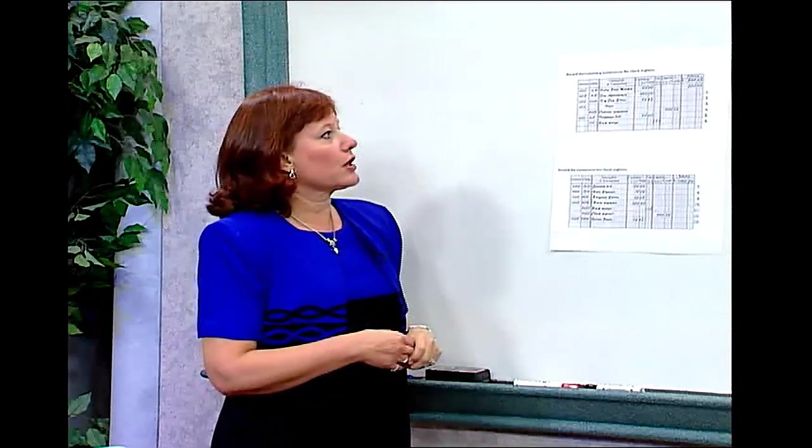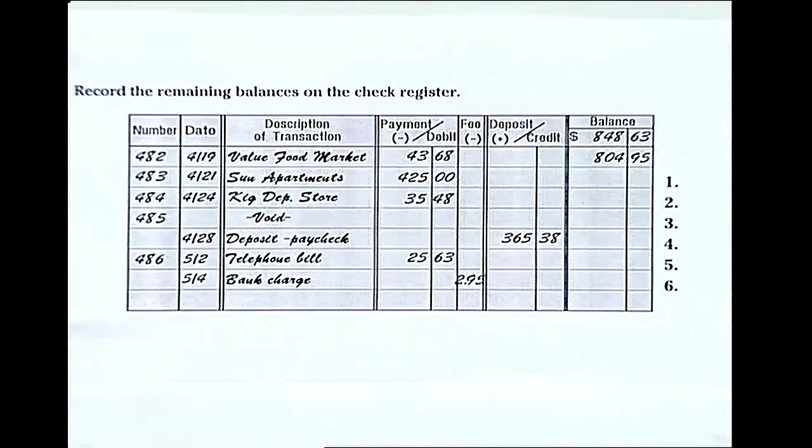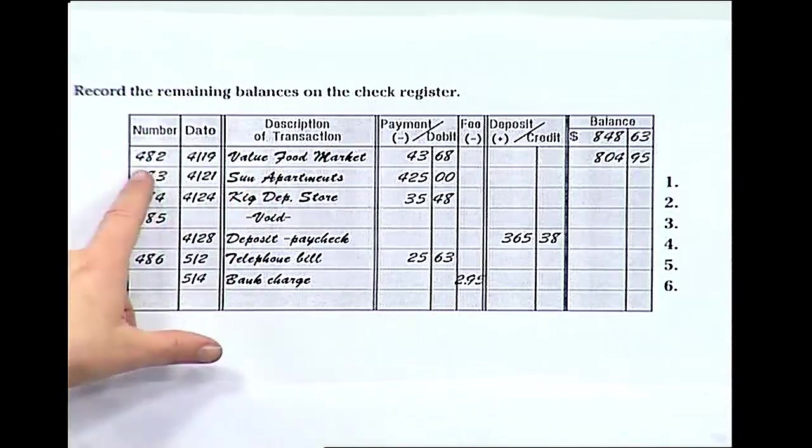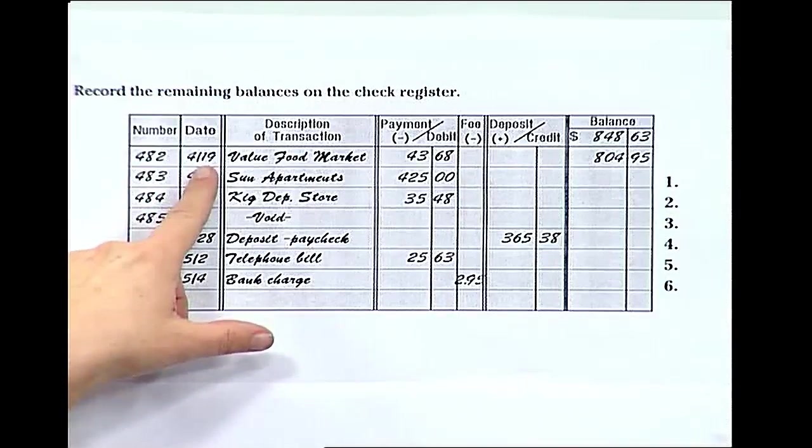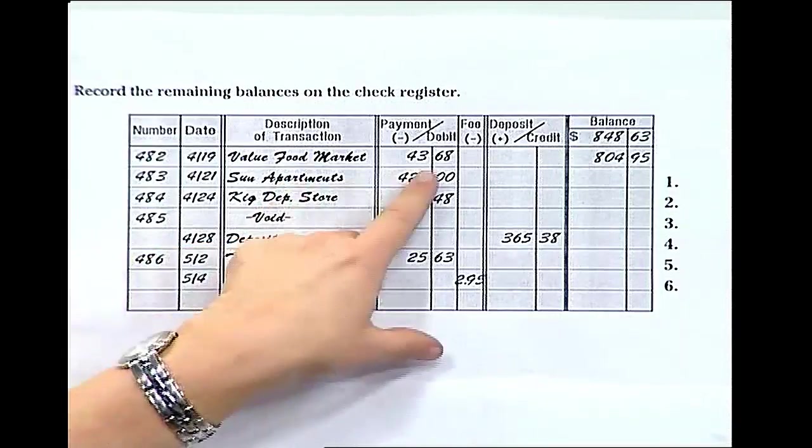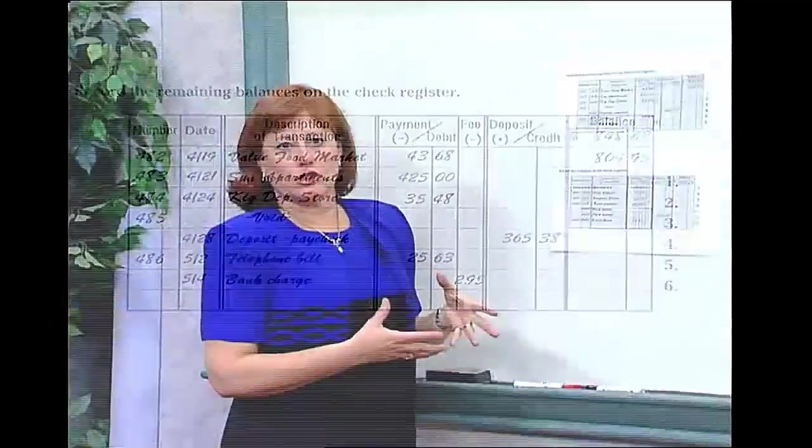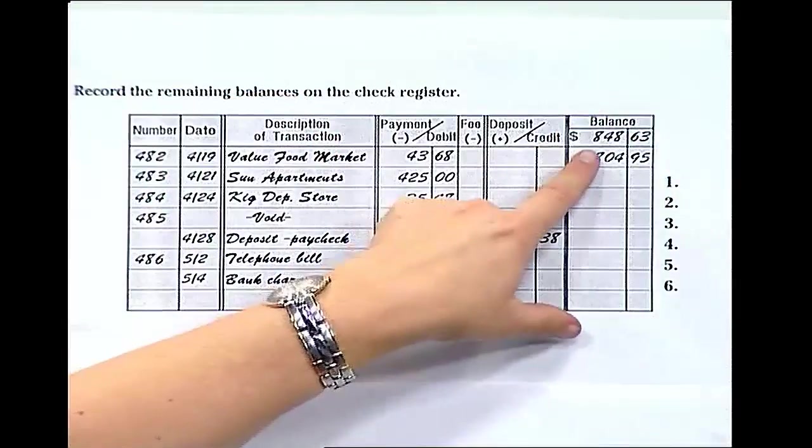In our sample check register, we started with a balance of $848.63. The first transaction that happened during this time period was that a check was written to Value Food Market. We recorded the check number as 482, the date of the transaction as 419. We gave a description, it was written to Value Food Market, and it was written for $43.68. Since this is a check, it's a debit, and you're going to want to subtract that amount.